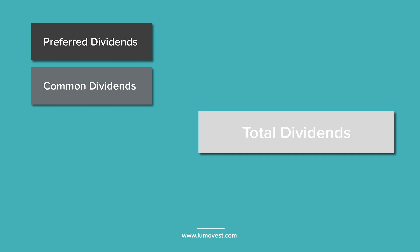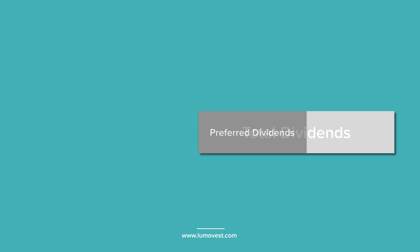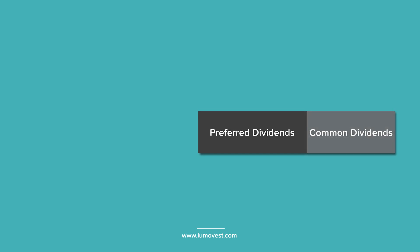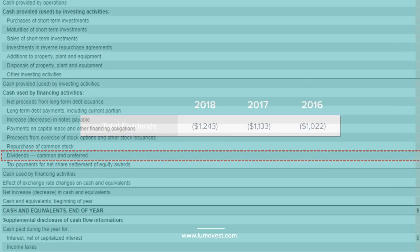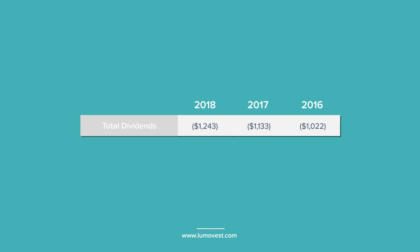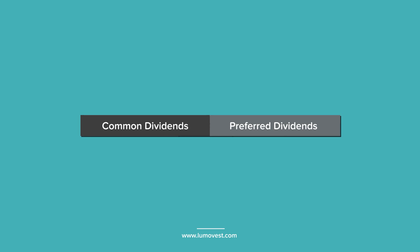The thing you have to be careful about is that some companies that have preferred stocks will lump the dividends for both preferred and common stocks together into a single line item on the cash flow statement. But if we're analyzing the common stock of a company, we only want to include the dividends paid to the common shareholders. We don't want to include the preferred dividends because common stockholders aren't going to get that money, so including them would distort the numbers. A case in point is Nike. Nike has a preferred stock, and its $1.1 billion of total dividends on the cash flow statement includes the dividends paid to both common and preferred stockholders.